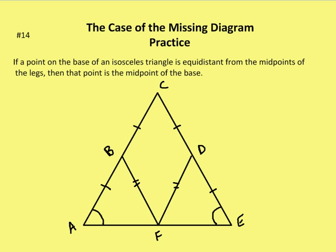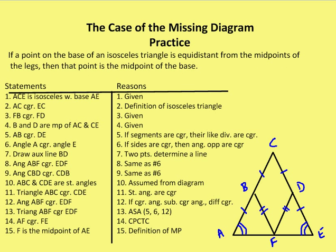The last problem, number 14: if a point on the base of an isosceles triangle is equidistant from the midpoints of the legs, then that point is the midpoint of the base. Again, we have to draw the figure. Point F on the base is equidistant from the midpoints of the legs, B and D, and we want to prove that AF is congruent to FE. First, ACE is an isosceles triangle with base AE — that's given. AC is congruent to CE by definition of isosceles. FB is congruent to FD because the point is equidistant from the midpoints of the legs — that's given.